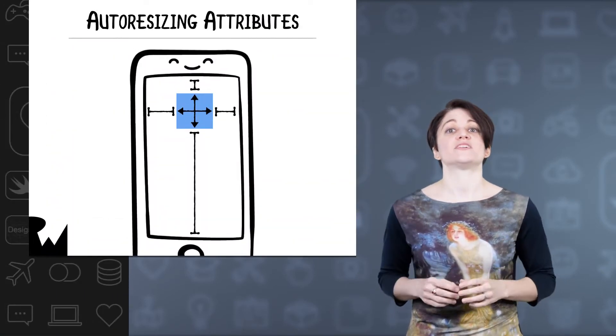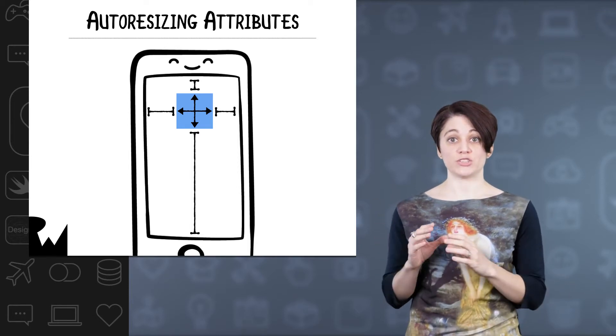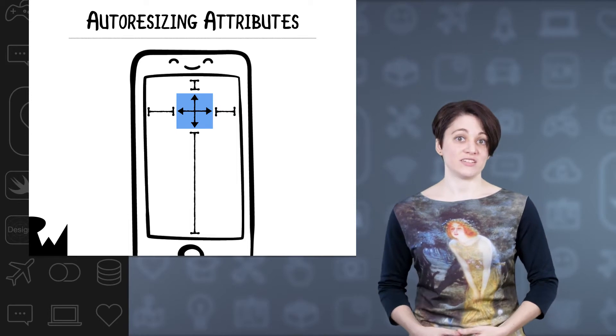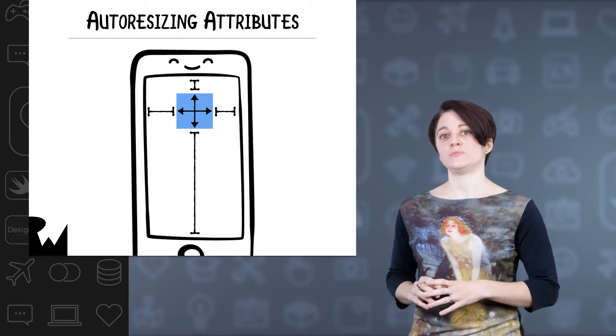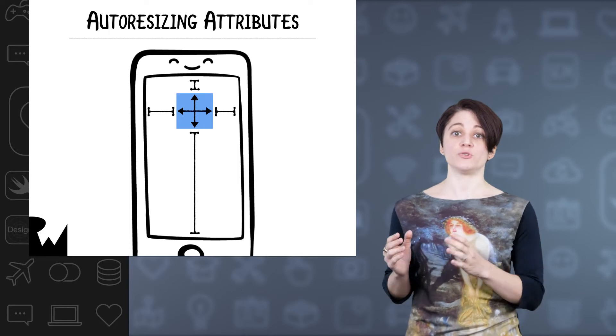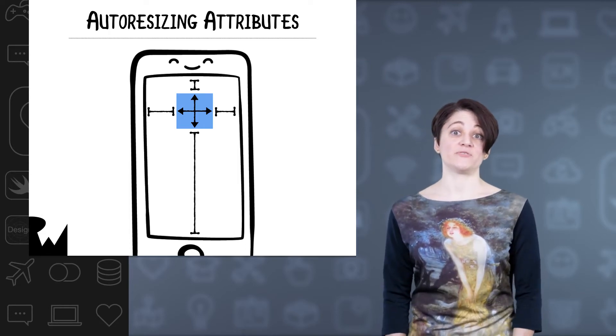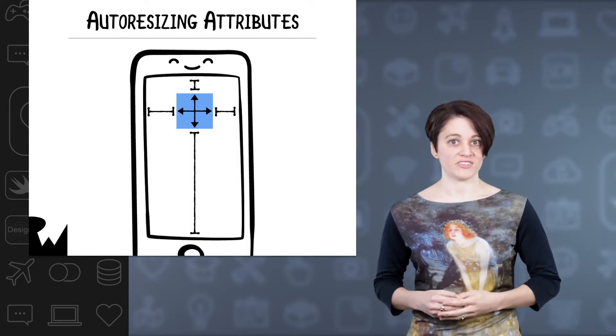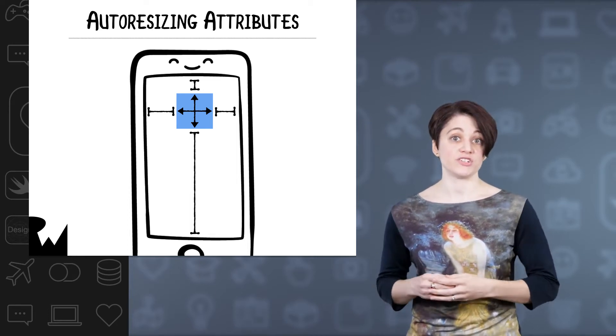Auto resizing has been around since the beginning of iOS. It was the first way to create a view that could adapt automatically to a size change, and it's still useful in limited instances today. Auto resizing defines the flexibility of six attributes between a view and its super view: the left, top, right, and bottom margins, and the width and height. In this case, margin just means the space between that edge of the view and the super view. Each of these attributes is defined as fixed or flexible, which defines how it will behave when the size of the auto resizing view's super view changes.